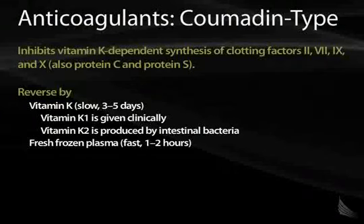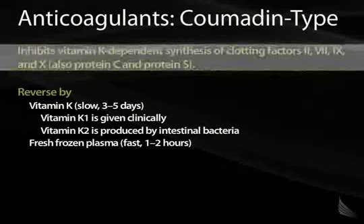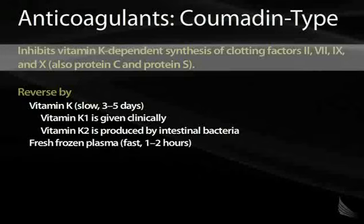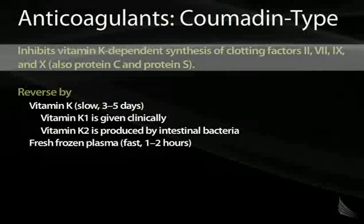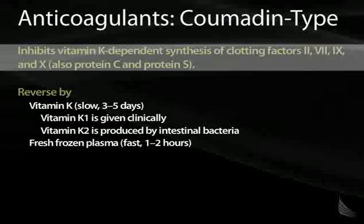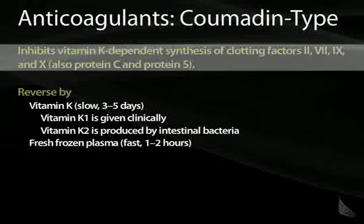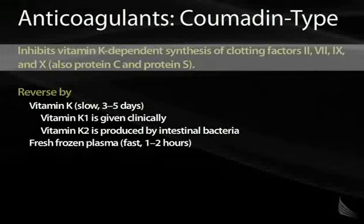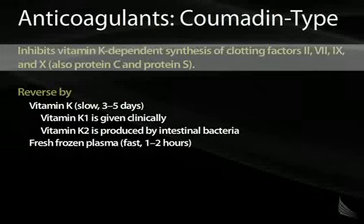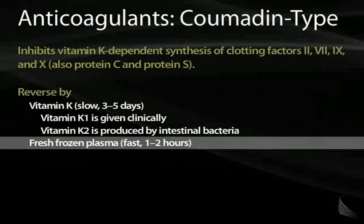Toxicity of Coumadin-type anticoagulants is a very important topic. Coumadin works by inhibiting vitamin K, which is responsible for the production of clotting factors 2, 7, 9, and 10, as well as the anticoagulant proteins protein C and protein S. If a patient has a very high INR, which is also known as PT, because they've been taking too much Coumadin, you have to assess the patient.